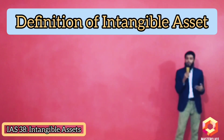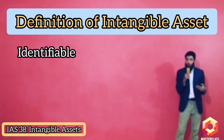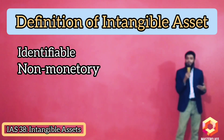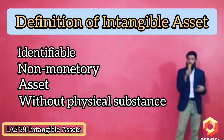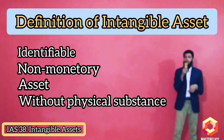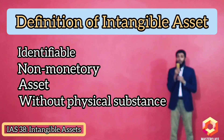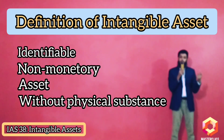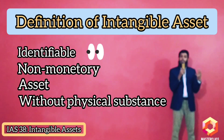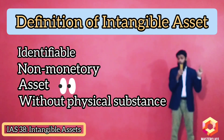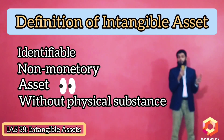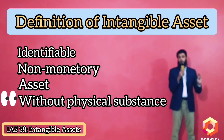An intangible asset is defined as an identifiable, non-monetary asset without physical substance. It's a one-line definition that talks about four things: an intangible asset has to be identifiable, it has to be non-monetary, it has to meet the definition of an asset, and it should be without physical substance.